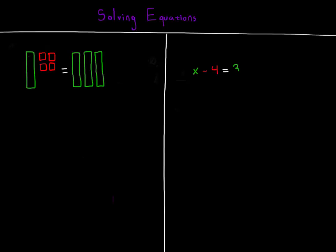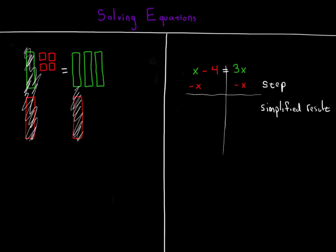We'd like to get the x's alone on one side of the equation or the other. And the easiest way to do that, in this case, is to eliminate a single x from both sides of the equation. By adding a negative x to both sides, on each side, one green bar cancels with one red bar, leaving negative 4 units on the left and positive 2x on the right.